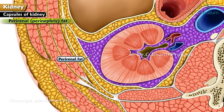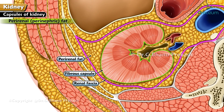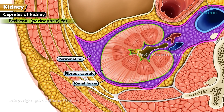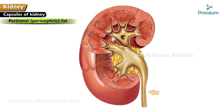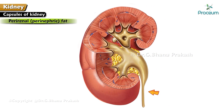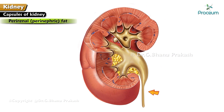Perirenal or perinephric fat is a layer of adipose tissue between the fibrous capsule and renal fascia. It is thickest at the borders of the kidney and is prolonged through the hilum, filling up the extra space in the renal sinus. In chronic debilitating diseases, kinking of the ureter is seen due to depletion of perinephric fat, which causes downward displacement of the kidney and compresses the ureter.